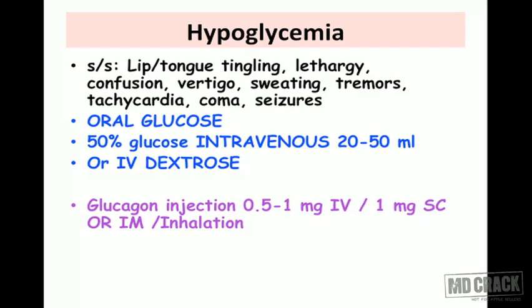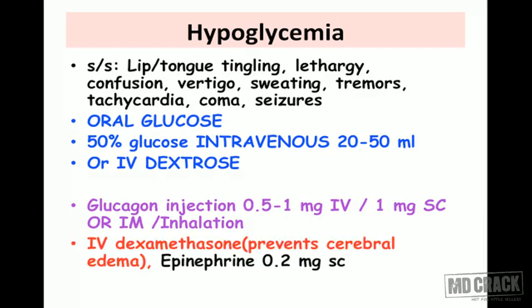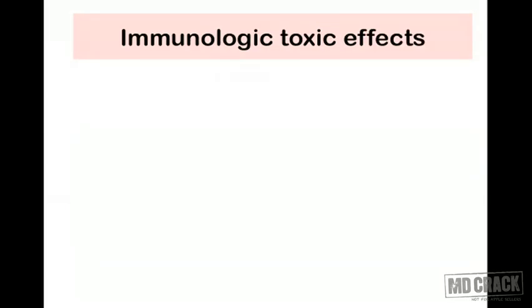If IV glucose is not effective, the next option is glucagon injection: 0.5 to 1 mg intravenously, or 1 mg subcutaneously, or by intramuscular route, or by inhalation. Another option is intravenous dexamethasone, a corticosteroid that prevents cerebral edema and has great value in resistant hypoglycemia. Epinephrine 0.2 mg subcutaneously is also an option.